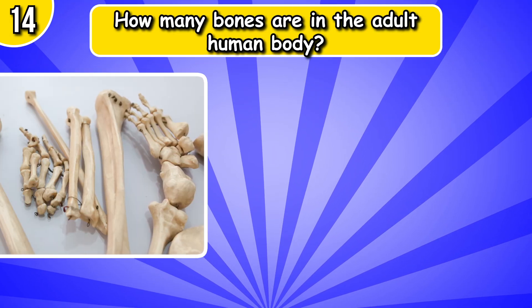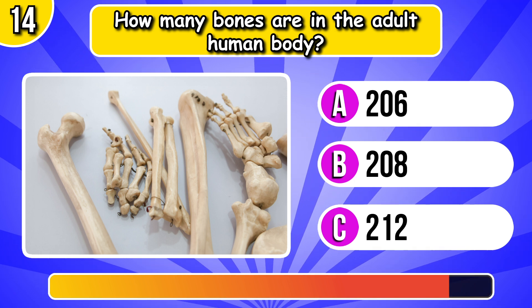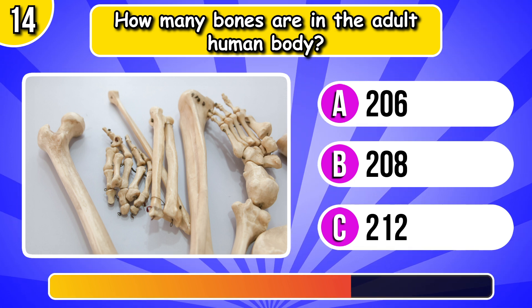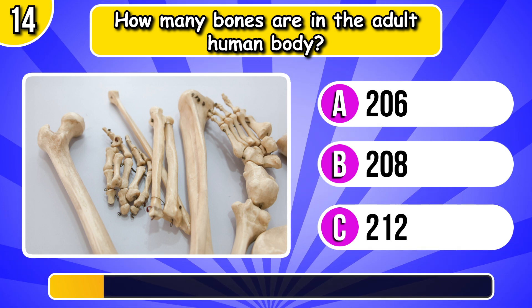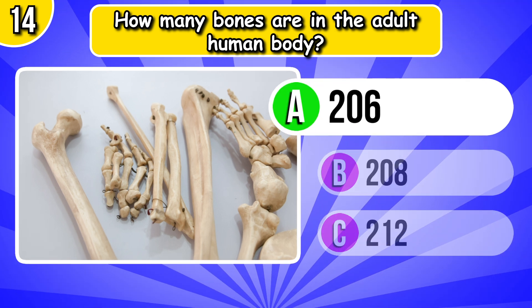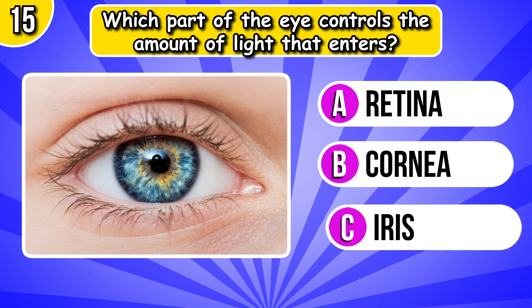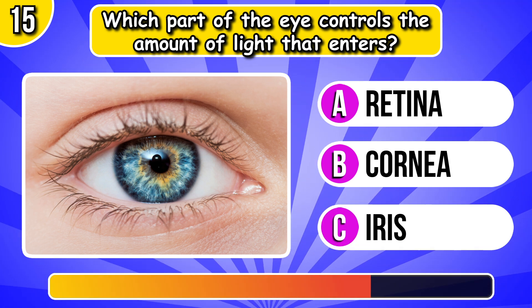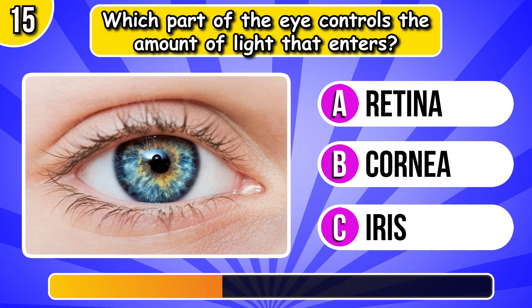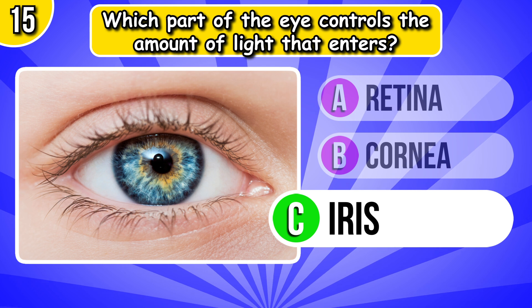How many bones are in the adult human body? 206. Which part of the eye controls the amount of light that enters? It's iris.